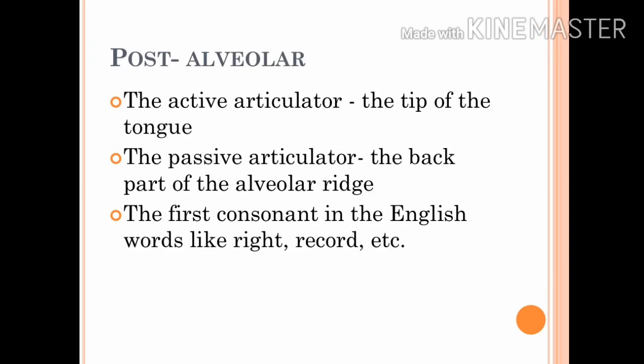Post-alveolar: the tip or the blade of the tongue is the active articulator and the back part of the alveolar ridge — that is, the part of the roof of the mouth that lies immediately after the teeth ridge — is the passive articulator. The first consonant in the English words 'write' and 'record' is an example of a post-alveolar sound.